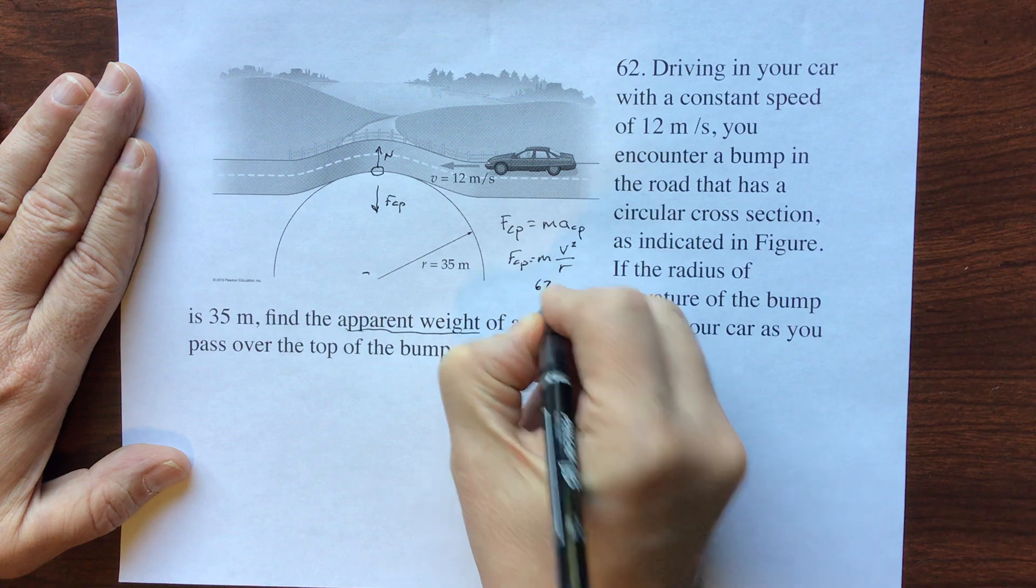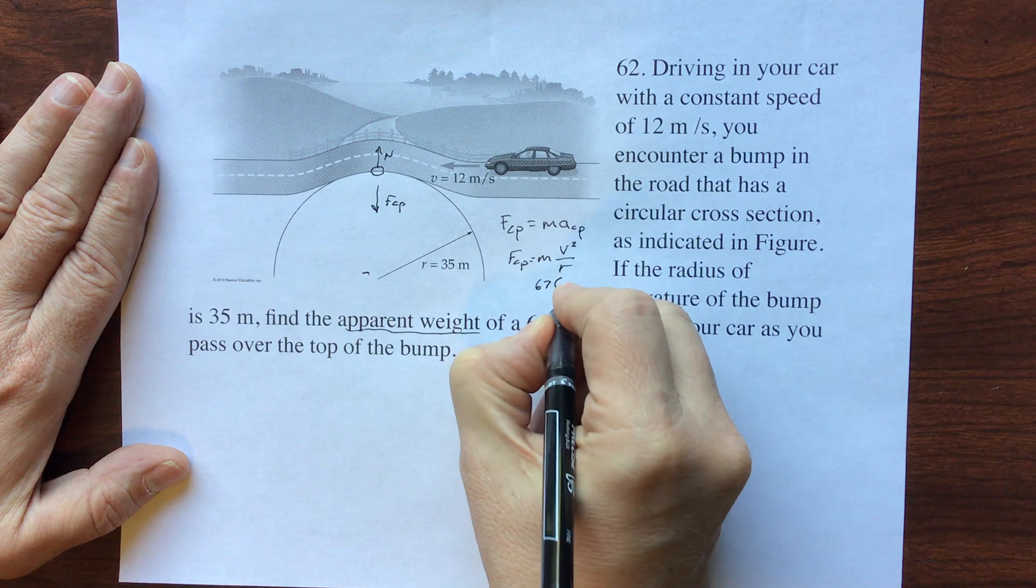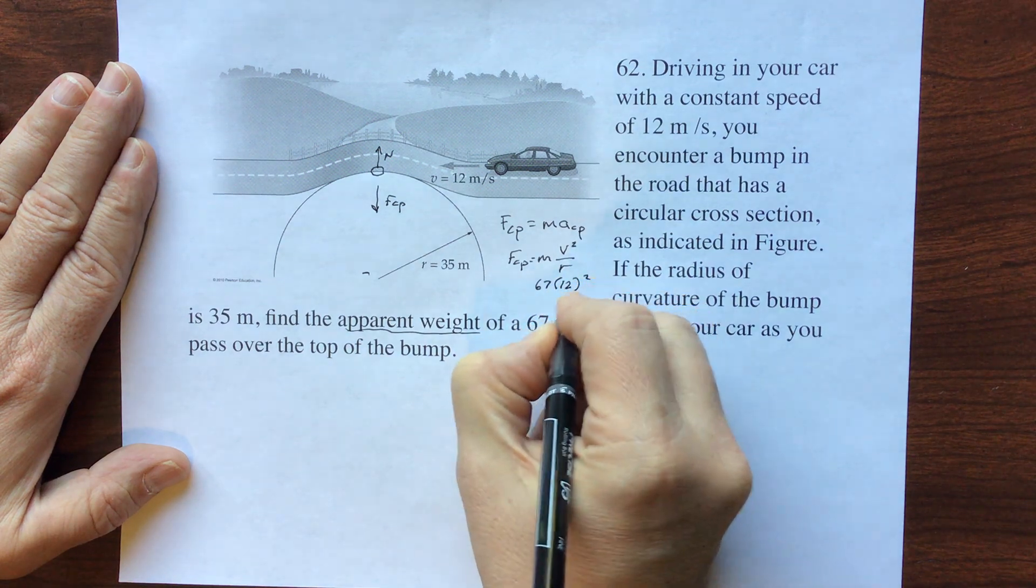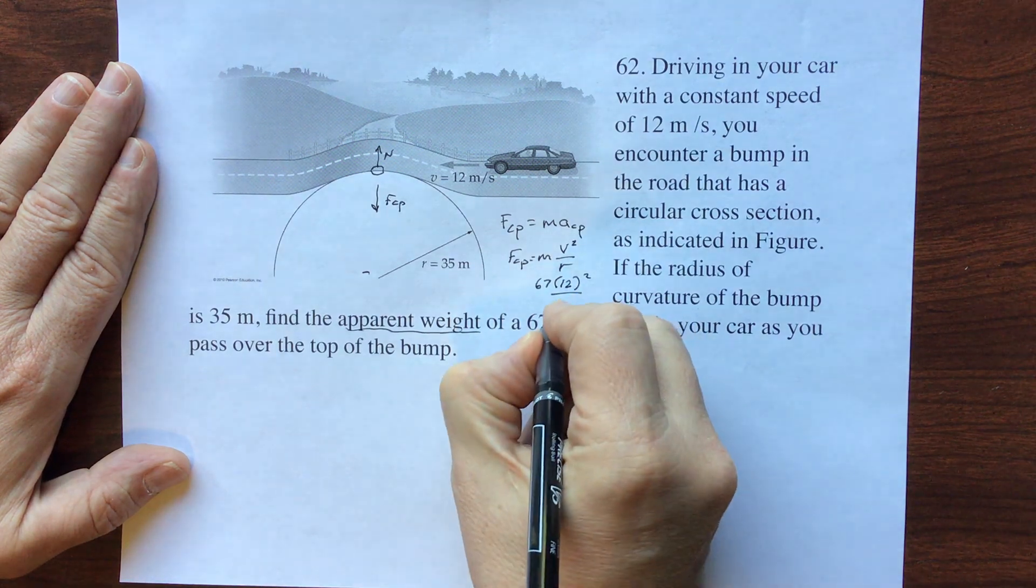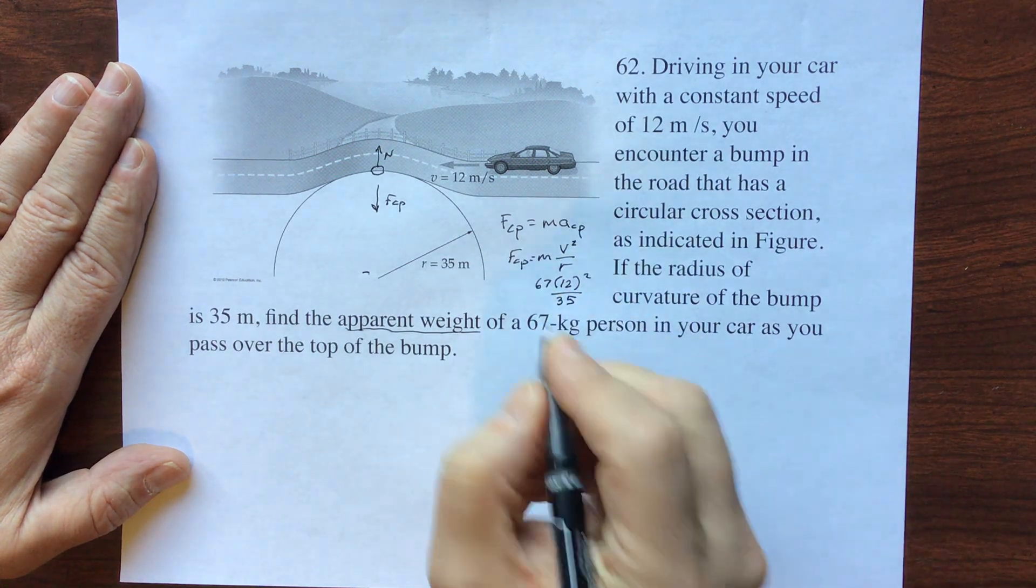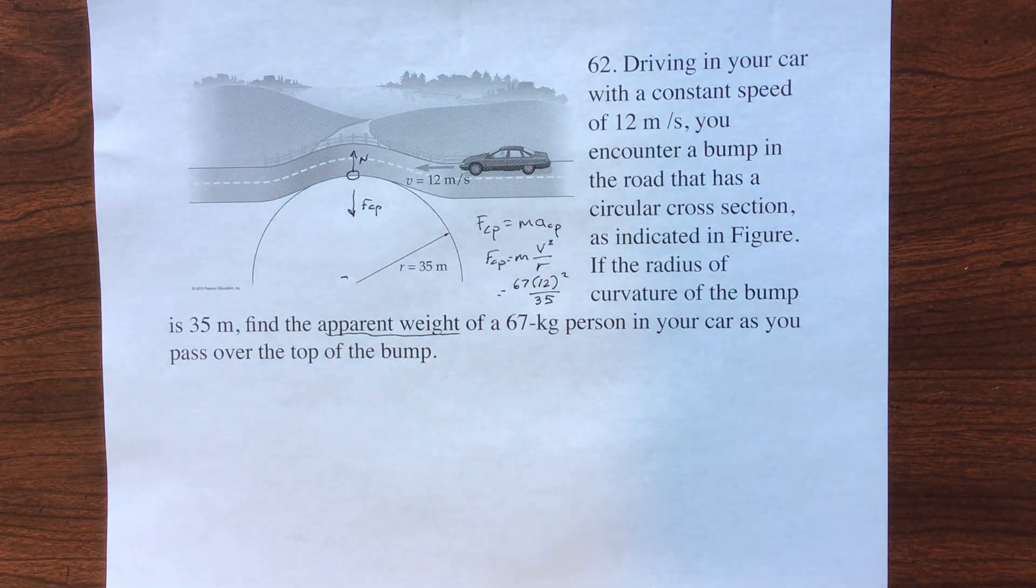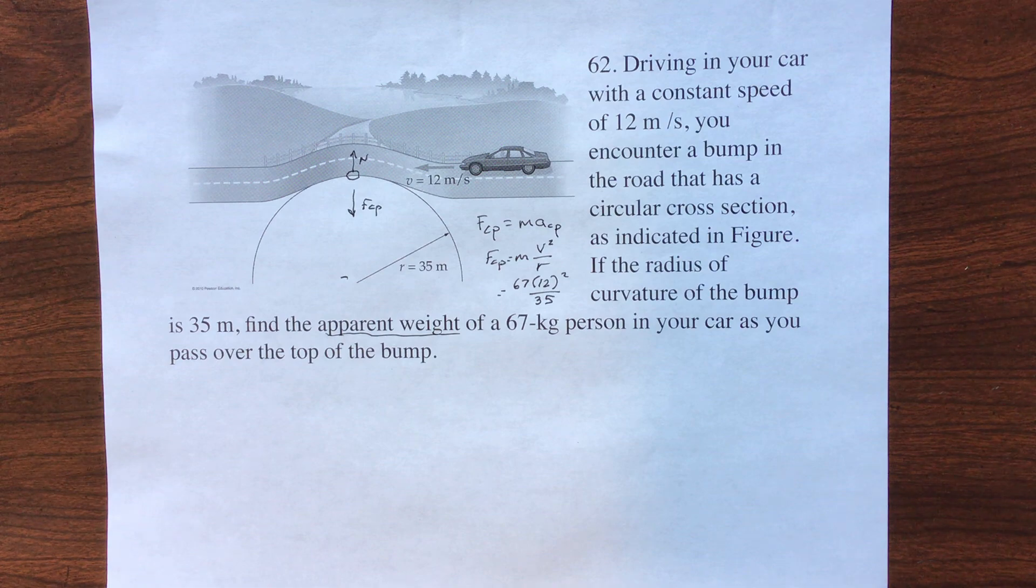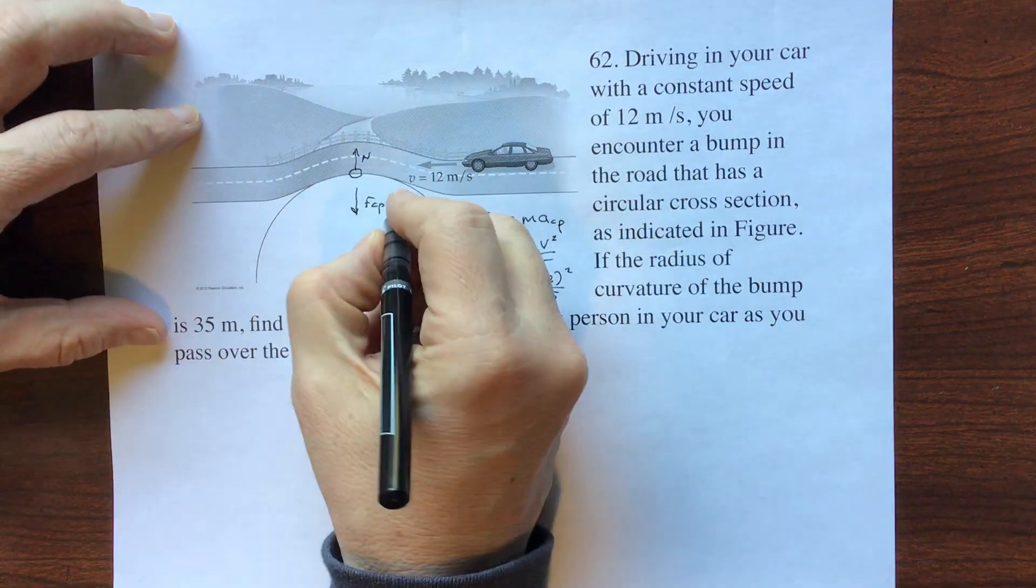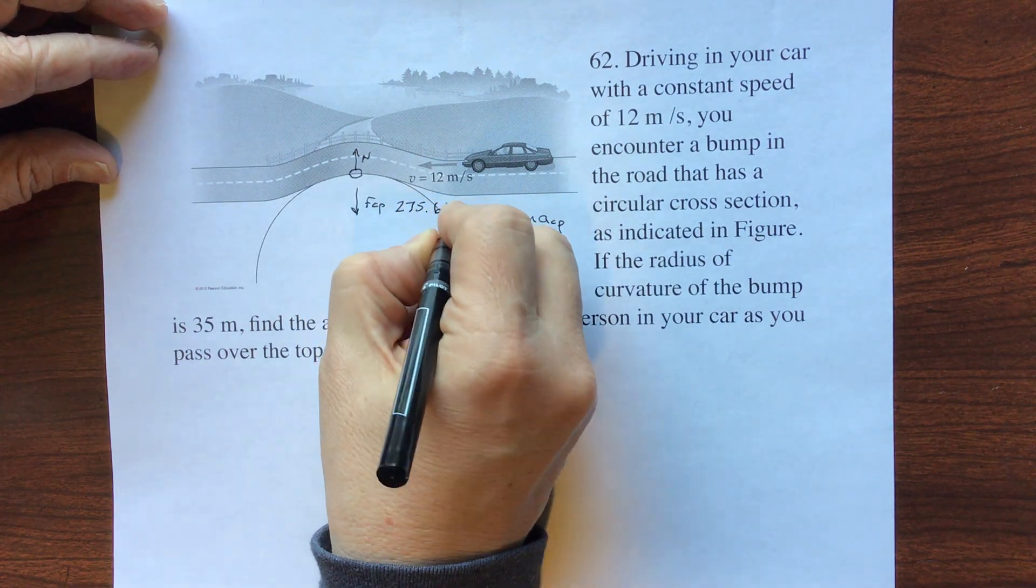The m is 67 kilograms. Your velocity is 12 meters per second, so I'm going to square that. And then your radius is 35 meters. All right, so 12 squared times 67 divided by 35. That gives you a centripetal force of 275.66 newtons.